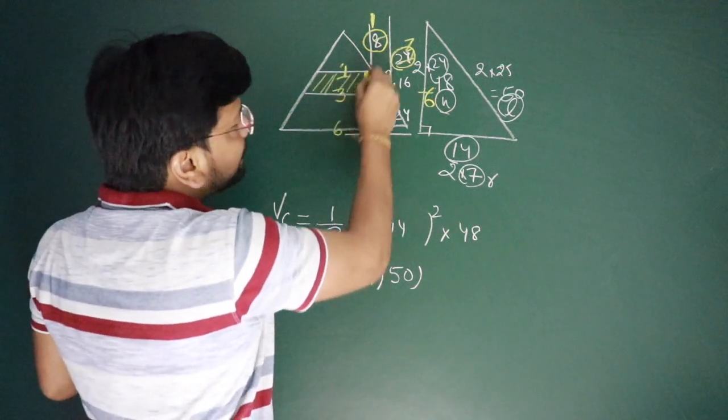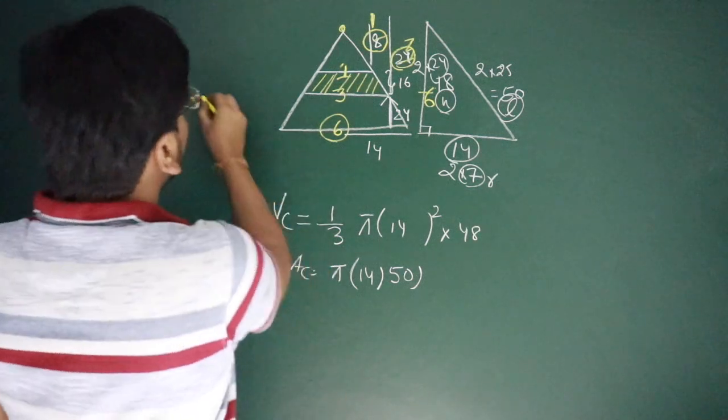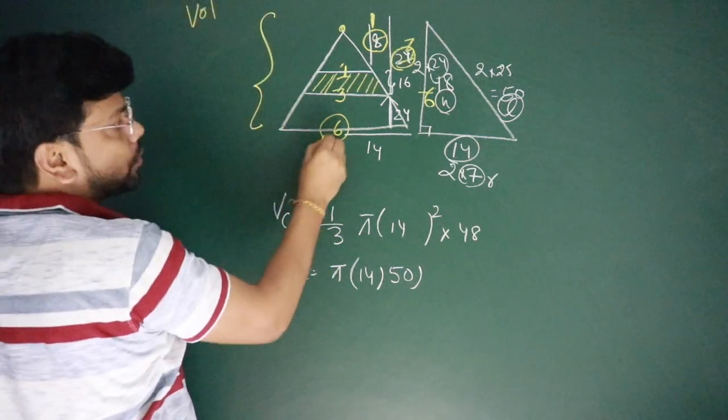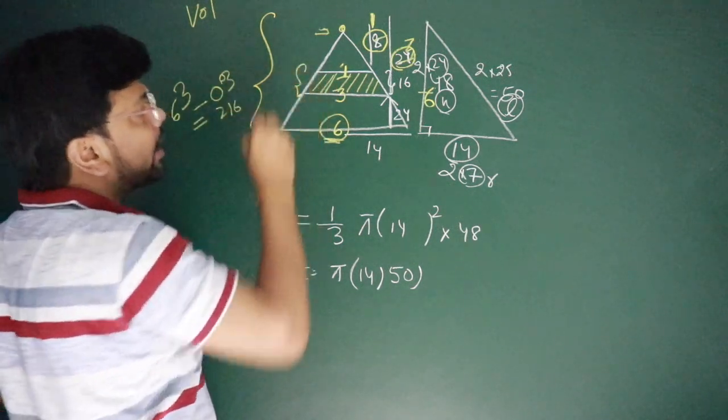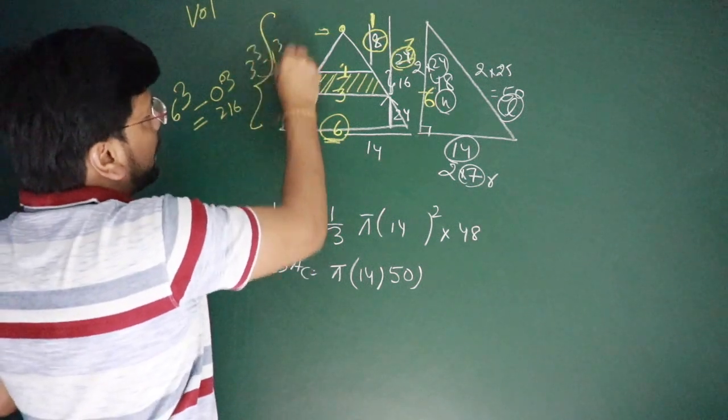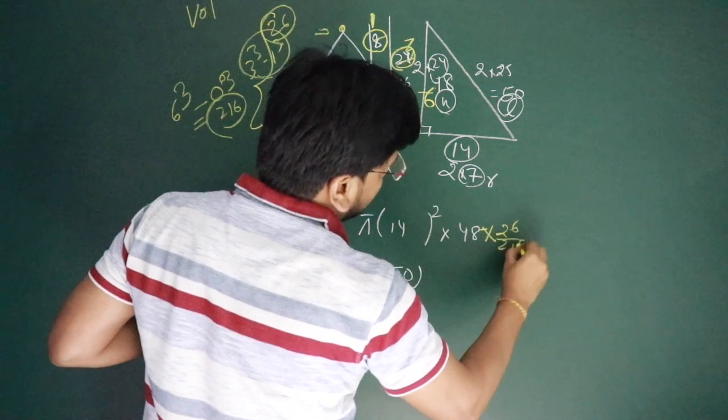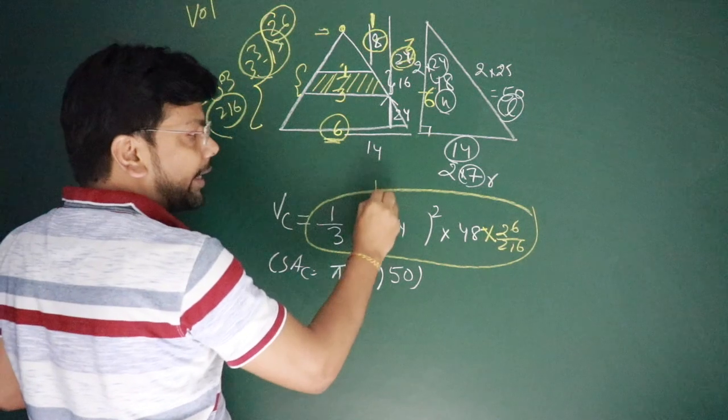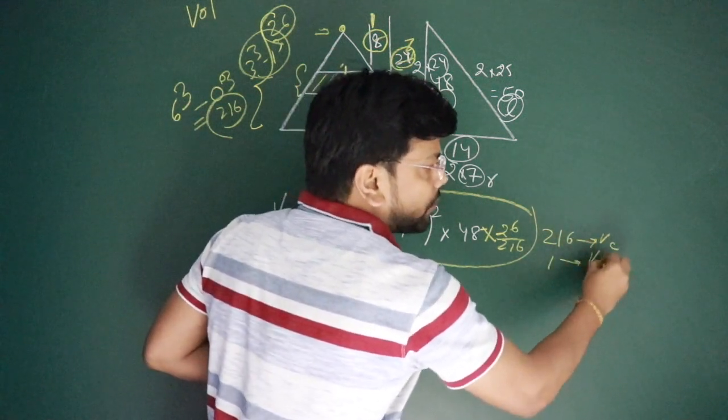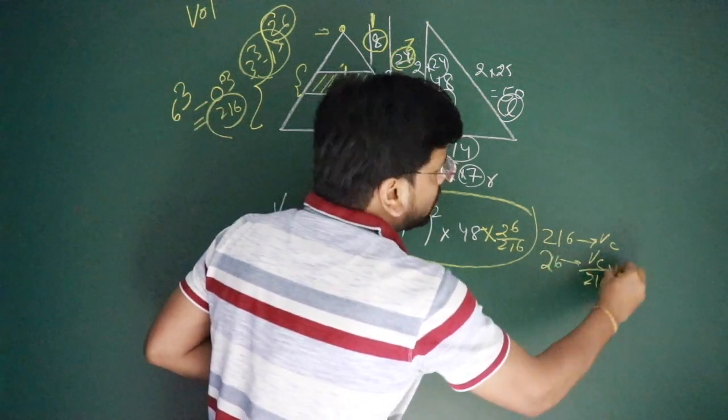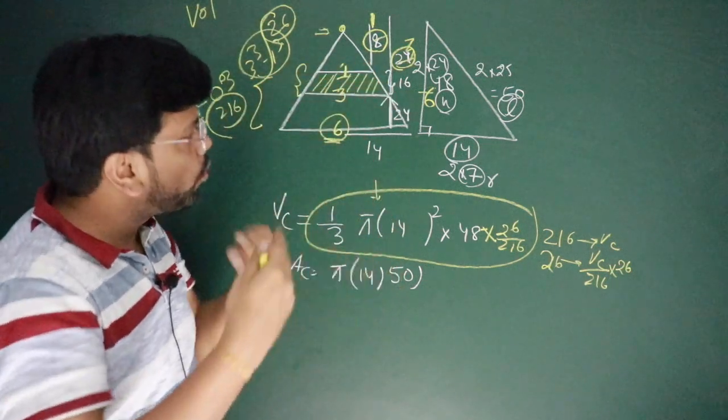We need to find the middle portion's volume and surface area. For volume, if the total base is 6, and we apply Thales' theorem between 6 and 0, the volume ratio is 6³ - 0³, which equals 216. For the middle portion, it's 3³ - 1³, which equals 26. So we need 26 out of 216. If the full cone volume is V, then the required volume is 26/216 times V. We use cube because we're finding volume. This is similarity and Thales' theorem.